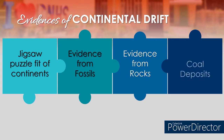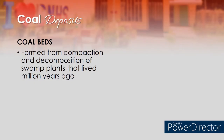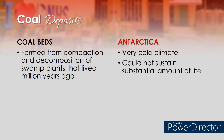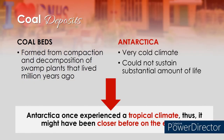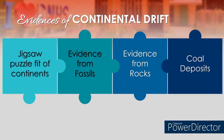The last evidence Wegener used are coal deposits and past climate data. Coal beds are formed from compaction and decomposition of swamp plants that lived millions of years ago. These were discovered in continents with tropical climates like South America, Africa, the Indian subcontinent, and Southeast Asia. Interestingly, coal beds are also found in Antarctica. As we all know, Antarctica has a very cold climate and its current location could not sustain substantial amounts of life. If there is coal in Antarctica, it must have been positioned where it could support large quantities of life, leading to the idea that Antarctica once experienced a tropical climate and might have been closer to the equator. These are the evidences that support Wegener's theory of continental drift.